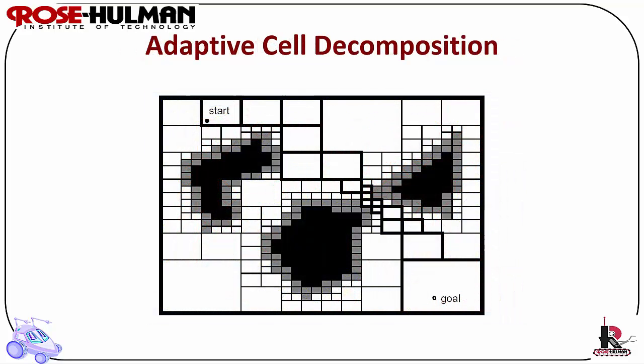And finally we have adaptive cell decomposition. Adaptive cell decomposition or quad trees avoid wasted space because it is a recursive grid. If an object falls into a part of a grid it divides the element into four. A 3D quad tree is called an octree.